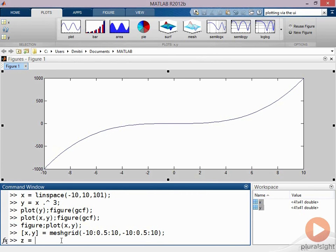So the z value in this case is going to be sine x multiplied by the hyperbolic sine of y, for example.